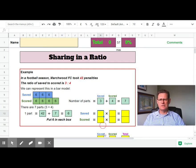Then we multiply the number of parts. There are three parts that are saved, and each part is six.